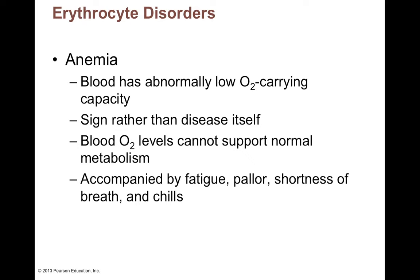Anemia is basically where you have low O2 carrying capacity in blood. It's a sign rather than a disease. Clinically, signs of anemia include low hematocrit, low hemoglobin — your red blood cells will look more clear and less red. Blood O2 levels are so low you can't support normal metabolism. Symptoms of anemia include fatigue, malaise, low metabolism causing you to feel cold, shortness of breath, and chills from low body temperature rather than fever.